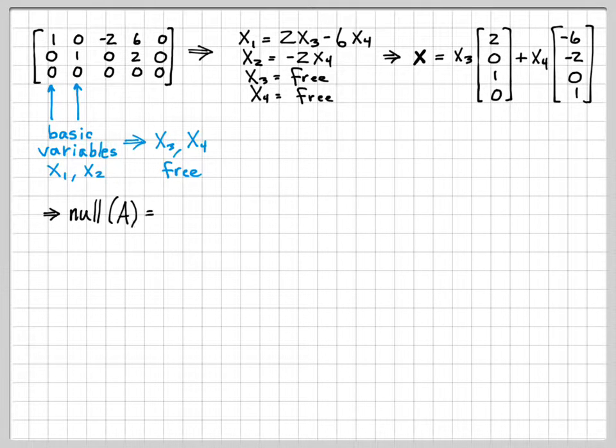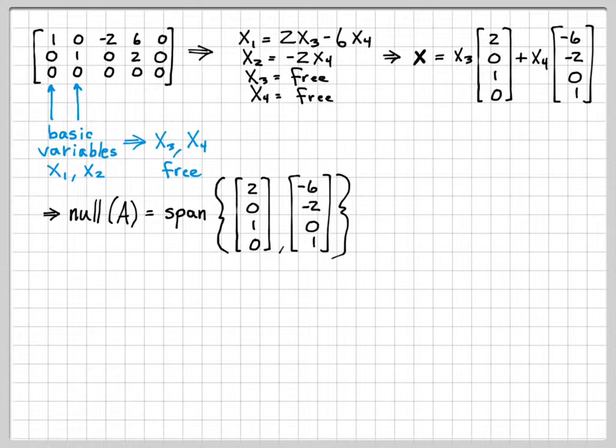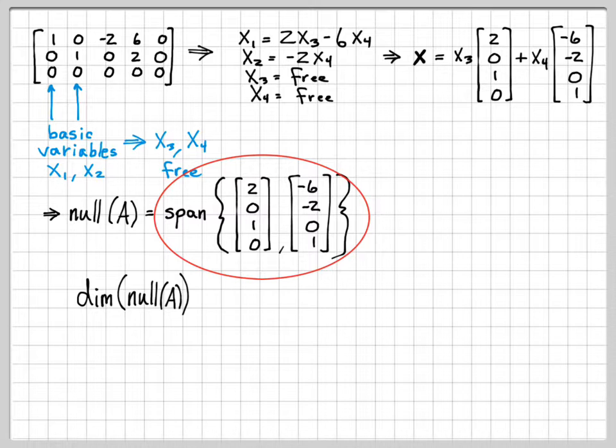So I've been able to write the null space of my matrix, the general solution for all the vectors in the null space, as a linear combination of two vectors. So what that really means is that my null space is really the span of those two vectors, [2, 0, 1, 0] and [-6, -2, 0, 1]. Because remember, this is a linear combination of these vectors. It consists of all linear combinations, because X3 and X4 are free. So that is the same thing as the span of those vectors. So I've been able to find a full characterization of my null space. My null space of this matrix is really the span of these two vectors. And the span is an infinite collection. It's all possible linear combinations of these two things.